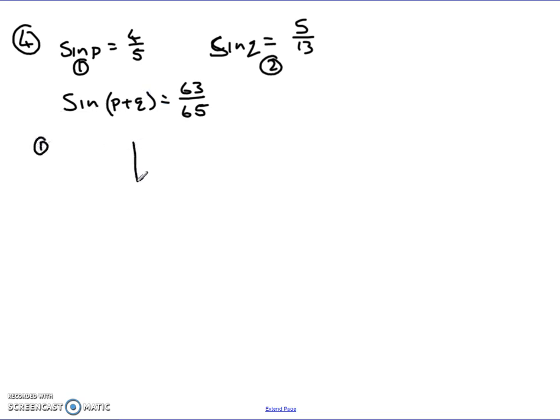So the first right angle triangle, we know that we've got sine P equals 4 fifths. So if I name this angle here P, sine is opposite over hypotenuse. Opposite is 4, and my hypotenuse is 5. So I've got two sides of my right angle triangle there.